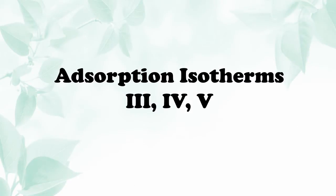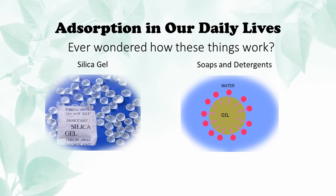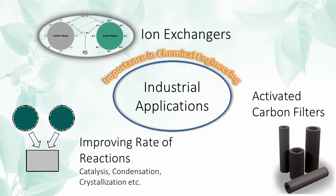Greetings and welcome to this video about adsorption isotherms type 3, 4, and 5. Adsorption is a surface-based process whereby particles from a substance adhere to the surface of the adsorbent. We observe adsorption in our daily lives through the use of silica gel as a desiccant and even in the cleansing mechanisms of soaps and detergents. Adsorption is also widely applied in many industries, especially those which rely heavily on catalysts. Examples of applications in the industries include ion exchanges and activated carbon filters.